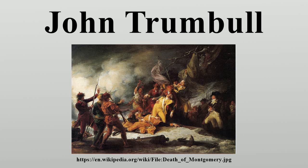In 1785 Trumbull went to Paris, where he made portrait sketches of French officers for the surrender of Lord Cornwallis. With the assistance of Thomas Jefferson, serving there as the U.S. minister, Trumbull began Declaration of Independence. While in Paris, Trumbull is credited with having introduced Jefferson to the Italian painter Maria Cosway; they became lifelong intimate friends. Trumbull's painting became widely known due to a later engraving of it by Asher Brown Durand, which was reproduced.